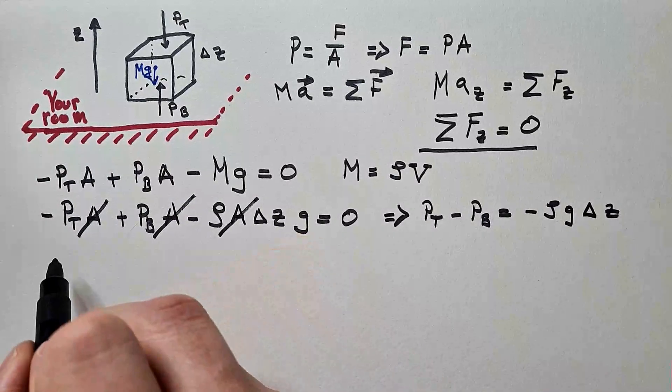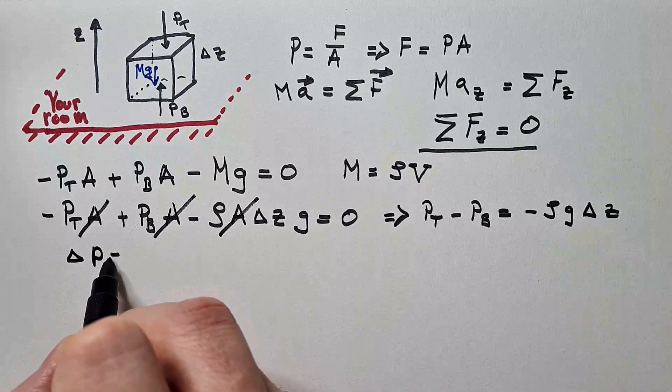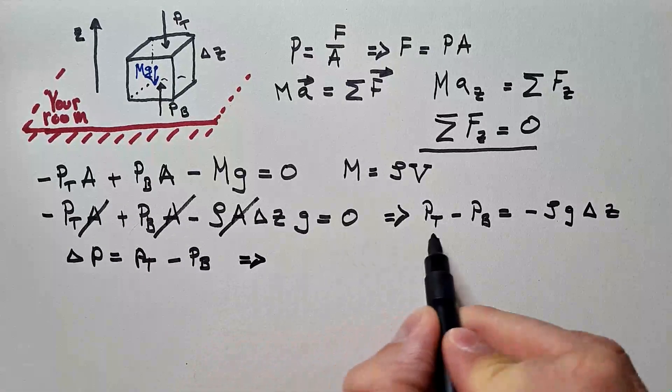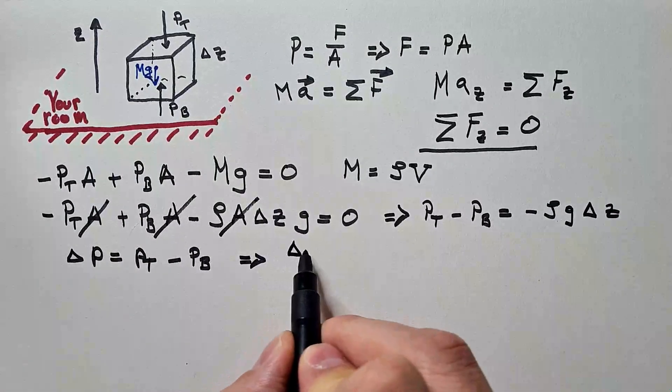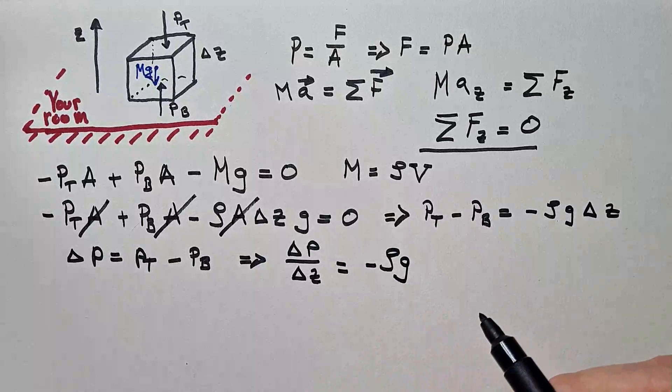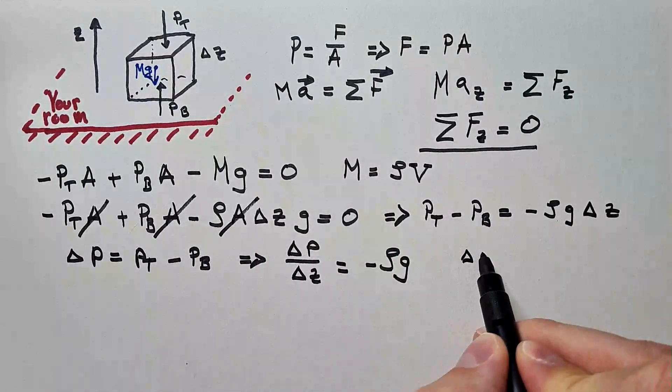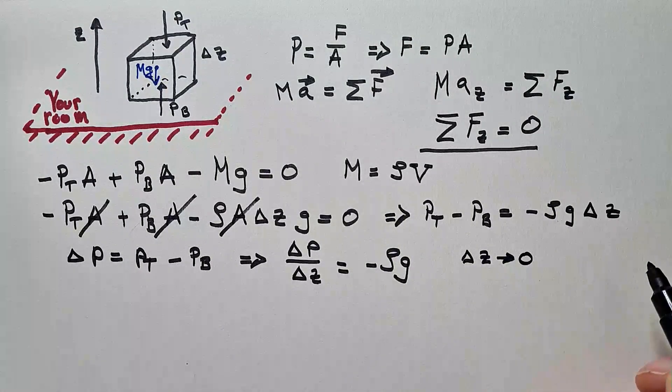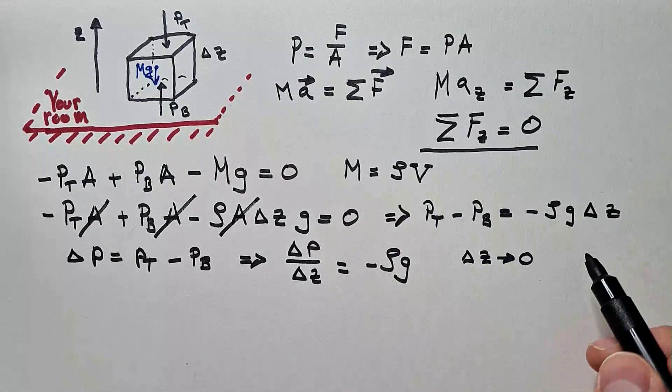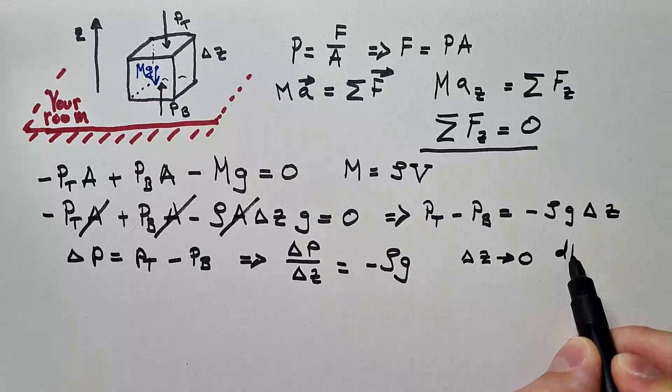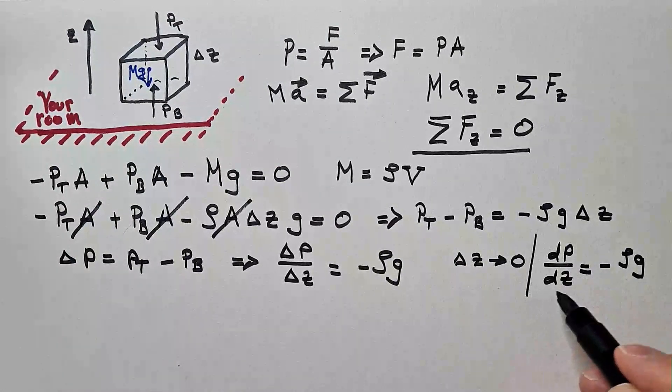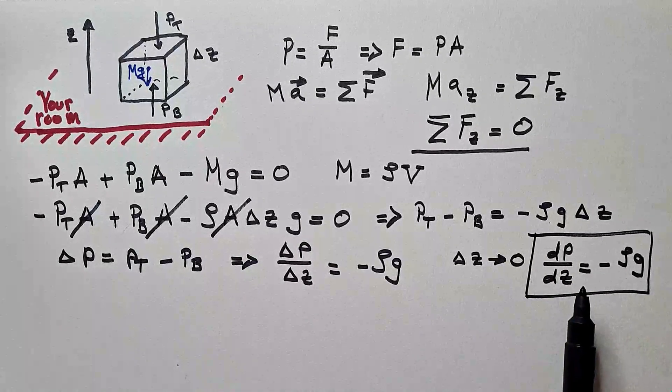I will further introduce just substitution. The delta P is this Pt minus Pb. And I can rewrite this expression as delta P over delta z is equal to minus rho g. If we make delta z go to zero in the limit case, check my video on limits, we can rewrite this equation as a differential equation. dP/dz equals minus rho g. And this over here is the hydrostatic equation.